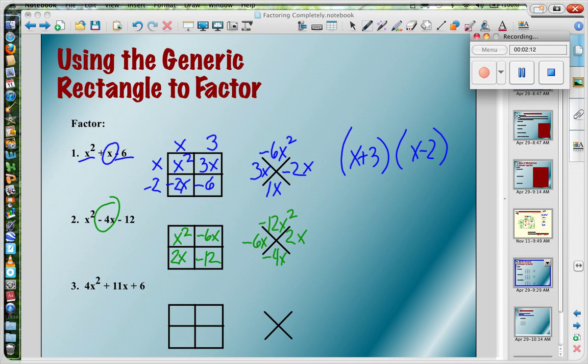Top row, greatest common factor is only x, and then it's x times x. And top right, x times negative 6 is negative 6x. Bottom left, I need x times 2, and I'm going to just double check. 2 times negative 6 is negative 12, so I'm good.